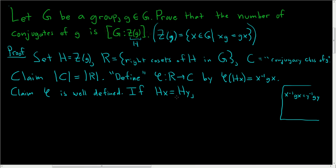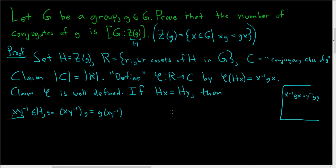Two right cosets being equal means that xy⁻¹ is in H. But H is special — H is the centralizer of g — so that means this element xy⁻¹ actually commutes with g. So (xy⁻¹)g = g(xy⁻¹). This is what we need to show. We can drop the parentheses, and it looks like we need to get rid of this x.